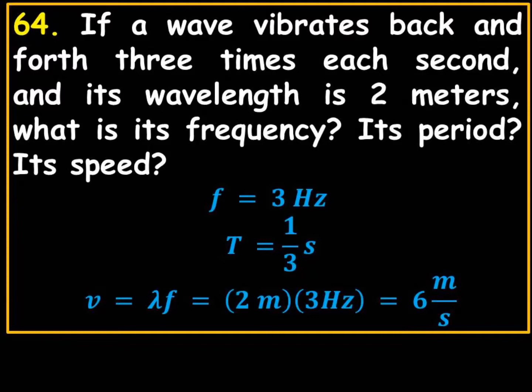Well, it says if a wave vibrates back and forth three times each second, so that's the period, three hertz cycles per second, and its wavelength is two meters, what is its frequency? Three hertz. What is its period? Well, three hertz, so what's one over three? It would be a third.